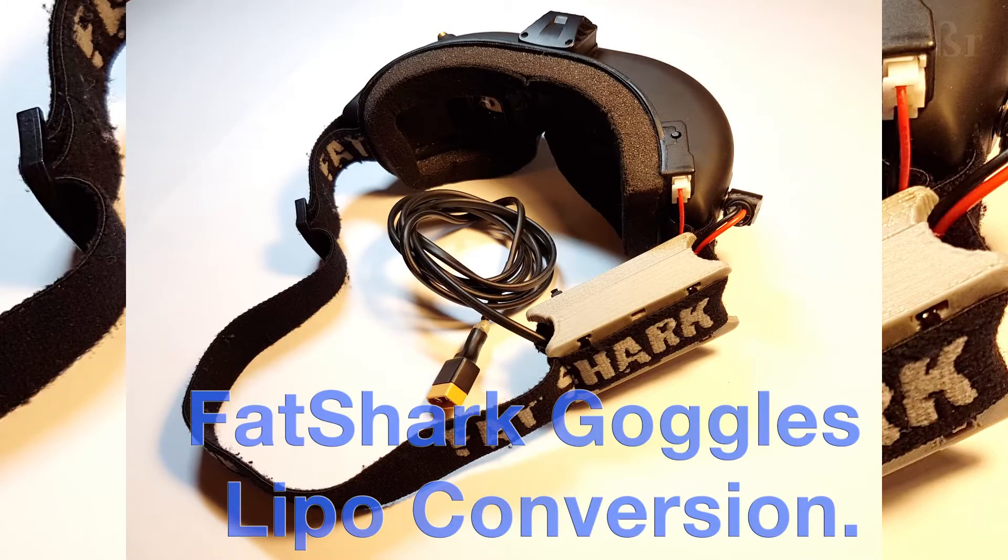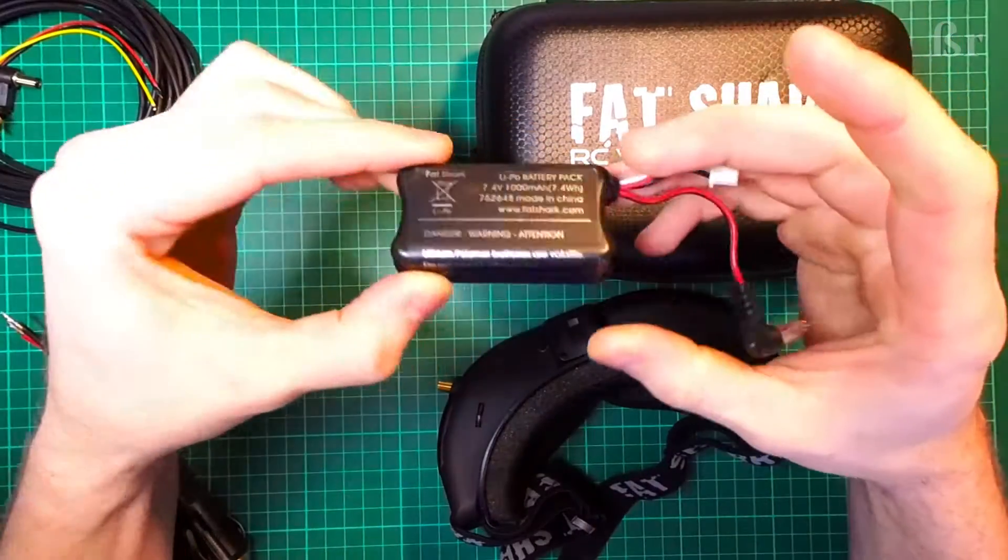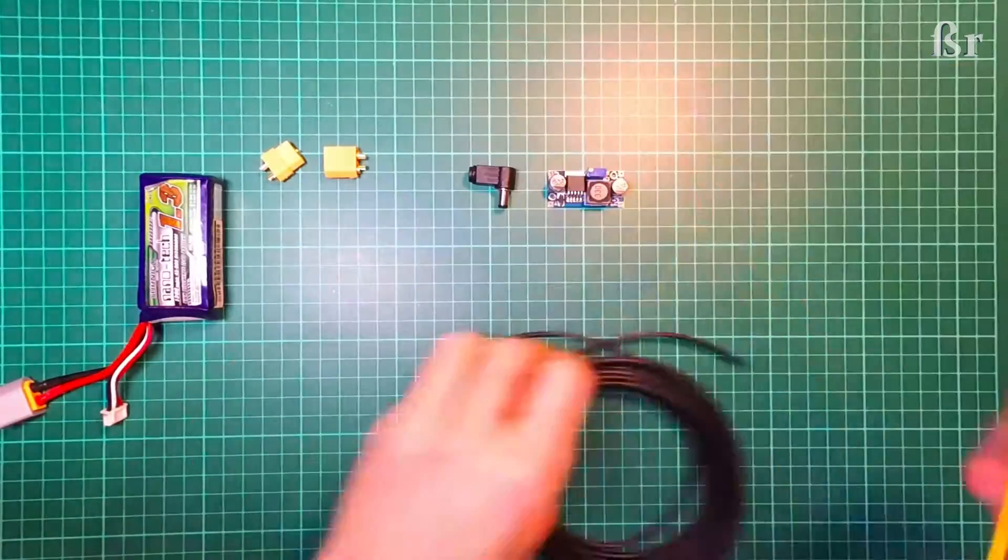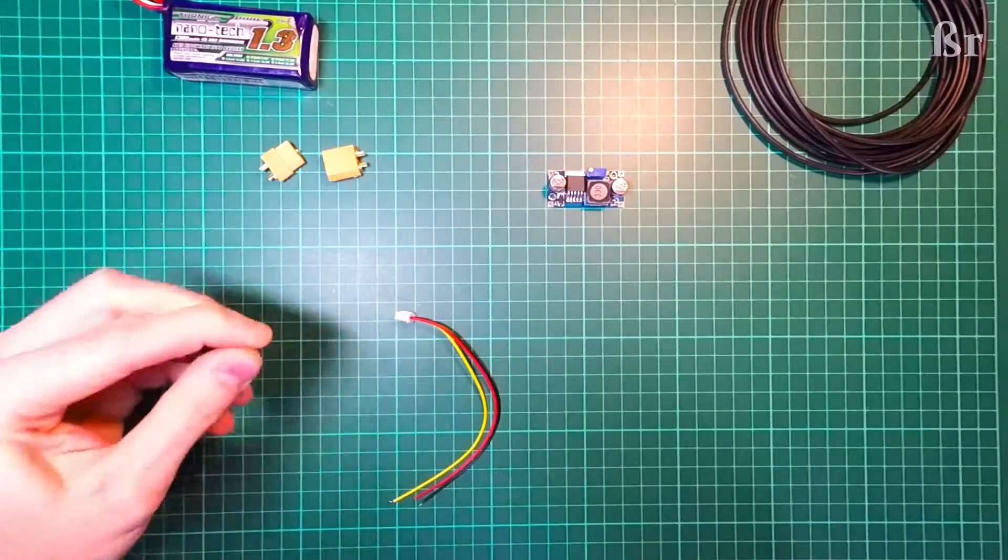Hey guys, what's happening? This is Beta Ready. In this video I'm going to show you how to make one of these LiPo conversion packs for your Fat Shark goggles. I'll have all of the parts listed in the description.